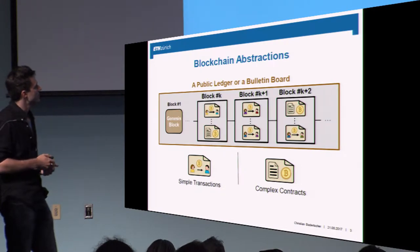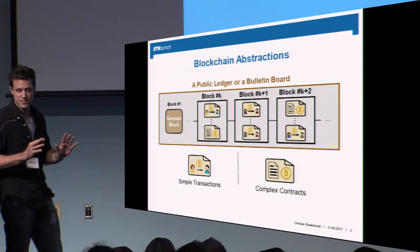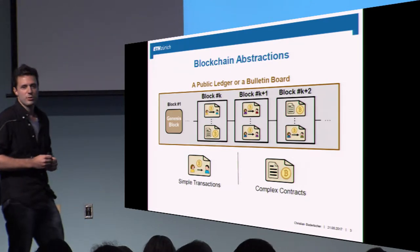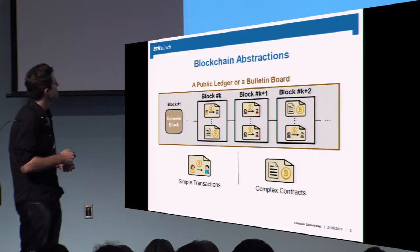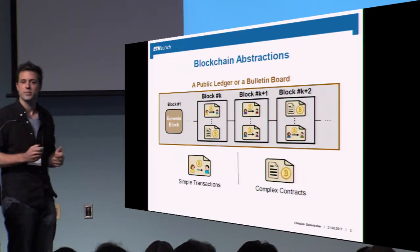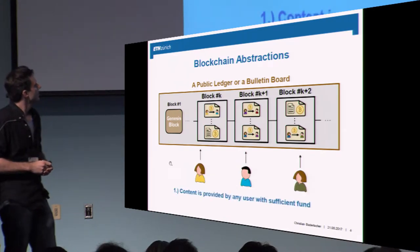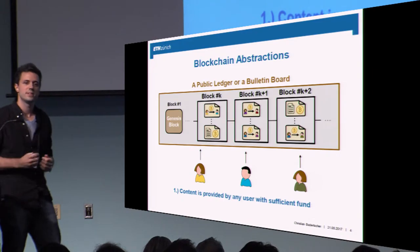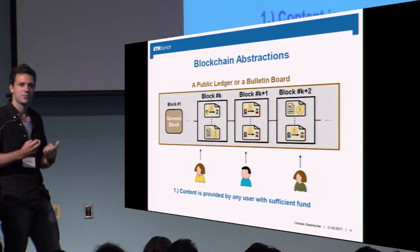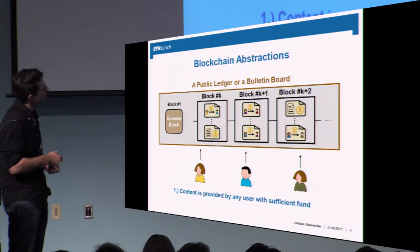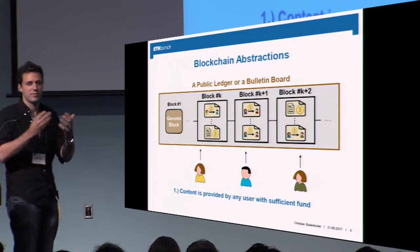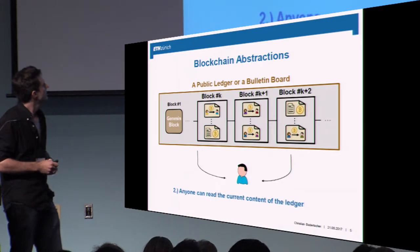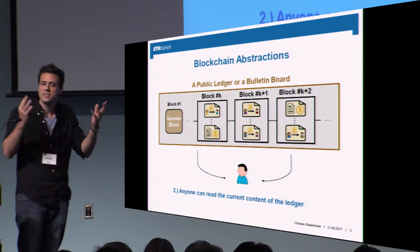As we have seen, simple transactions — Alice transfers some money; in reality these are addresses, so it's Alice's address, source and destination. But one could also think about having complex contracts in there, so-called smart contracts, and everything is listed in these blocks. The content is provided by anyone who submits such a transactional contract with sufficient funds. Alice can decide to transfer money to Bob, or even specify an entire contract that depends on the time and conditions. The second property is that anyone can read this state, so it's public.